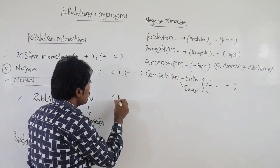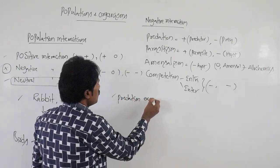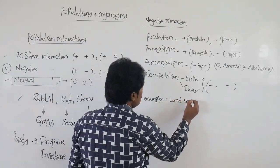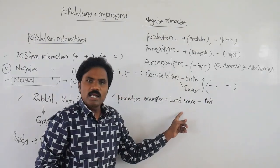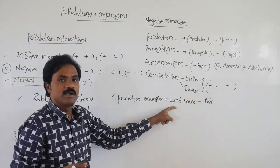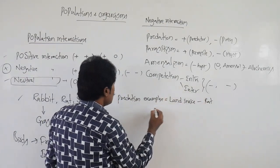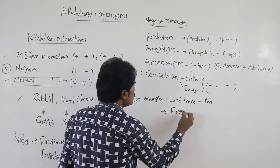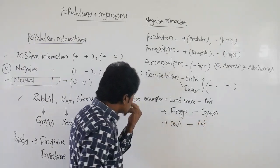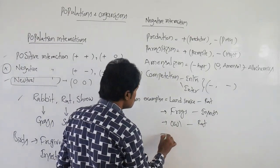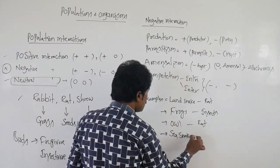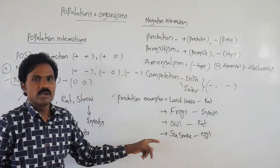Examples of predation: frogs eat insects, owl eats rat, and sea snake also acts as a predator. Trichoderma or Trichomatis organisms also act as biological controlling agents in this context.